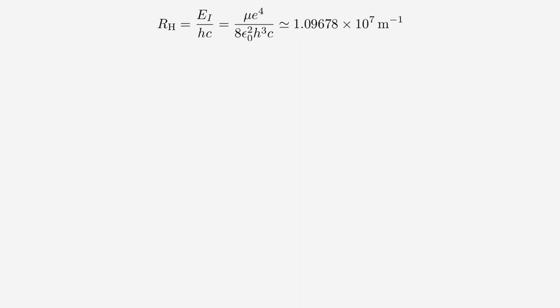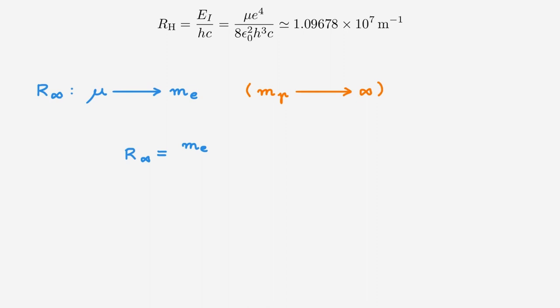However, as a quick aside, in your study of atomic physics you will often encounter a related constant which is also, confusingly, called the Rydberg constant, but it's labelled as R infinity. R infinity is simply the Rydberg constant in the limit that the reduced mass of the proton-electron system tends to the electron mass. An alternative but equivalent way to think of this is that it's the limit in which the proton mass becomes infinitely large, which allows us to view the hydrogen atom as simply an electron moving around a stationary proton. We can write the new Rydberg constant by simply replacing the reduced mass by the electron mass, and its numerical value is 1.09737 times 10 to the 7 inverse meters, so really close to the value of Rh.